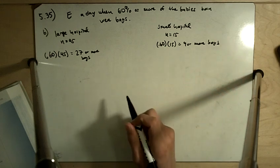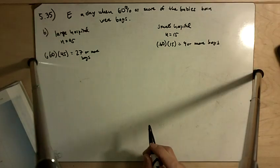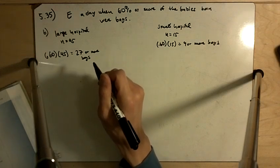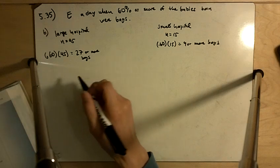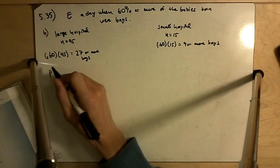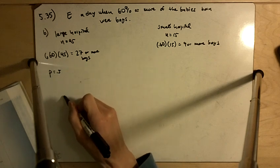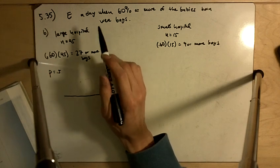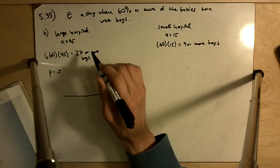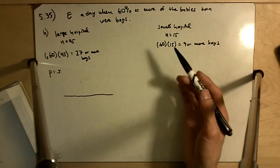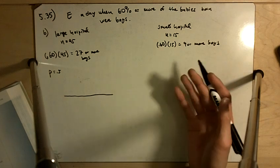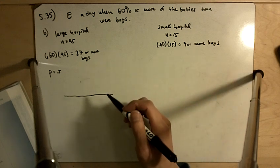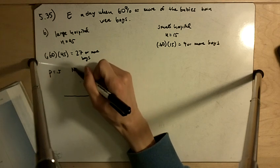The population proportion of boys is P equals 0.5. In both cases, on an average day, we're expecting about half of the babies to be boys. We're expecting on average about 22 or 23 boys at the large hospital, 22 or 23 girls at the large hospital. At the small hospital, there's seven boys and eight girls, or eight boys and seven girls. That's what we're expecting on the average day. But on some days, we might have more, we might have less. And so in this case, P is equal to 0.5.